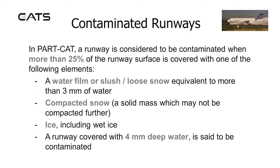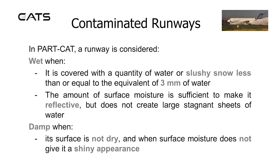So a runway covered with four millimeter deep water is said to be contaminated. In Part CAT, a runway is considered to be wet when it is covered with a quantity of water or slushy snow less than or equal to the equivalent of three millimeters of water. The amount of surface moisture is sufficient to make it reflective but does not create large stagnant sheets of water. It is considered to be damp when its surface is not dry and when surface moisture does not give it a shiny appearance.